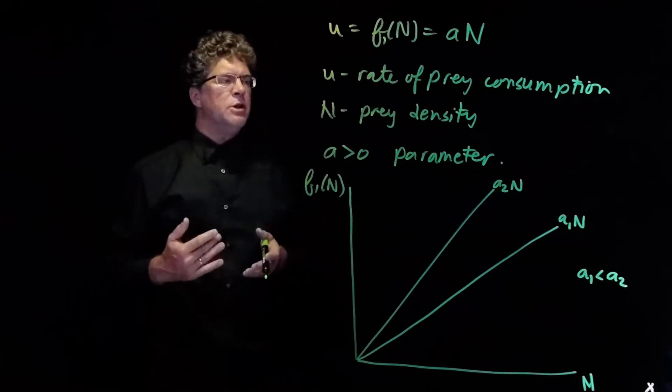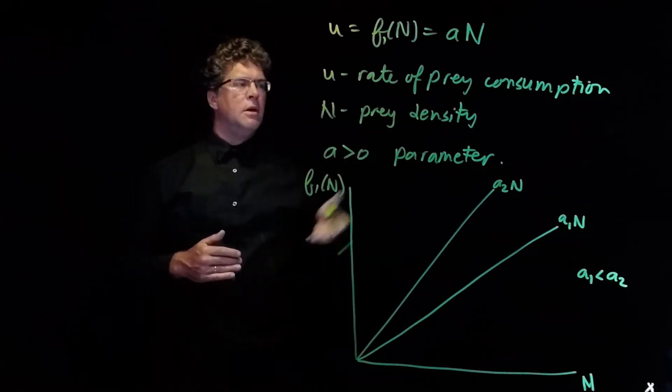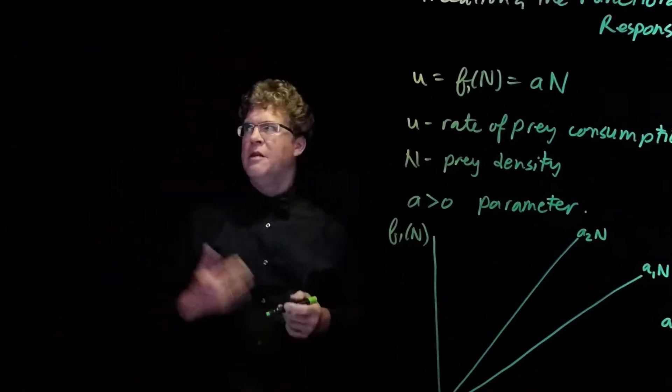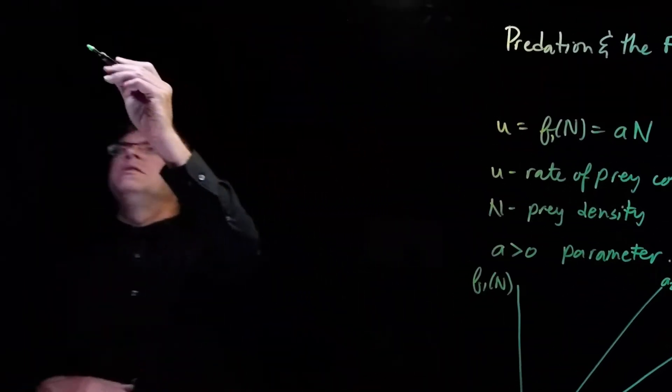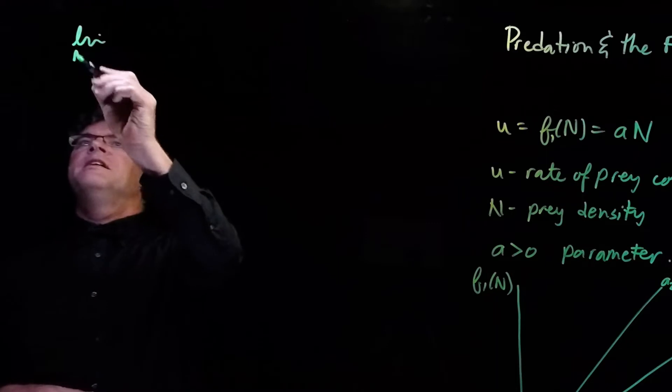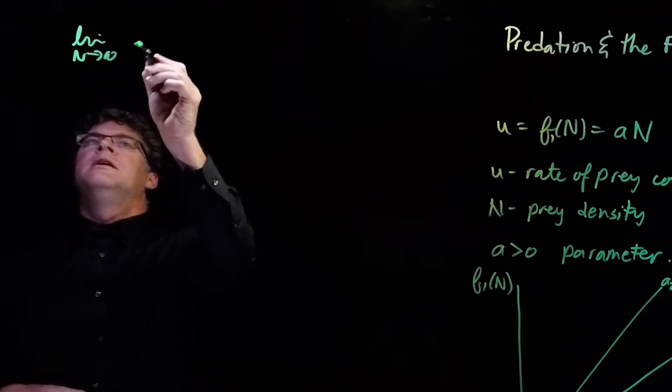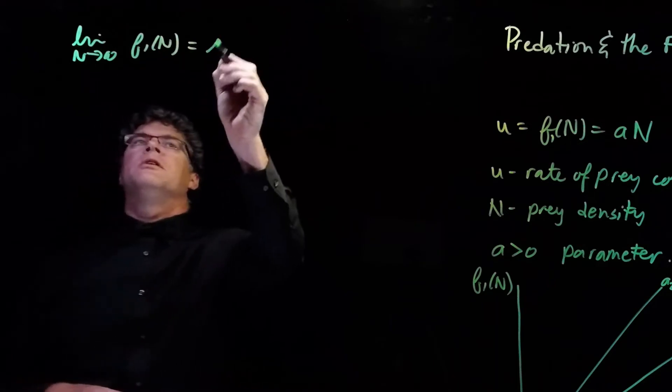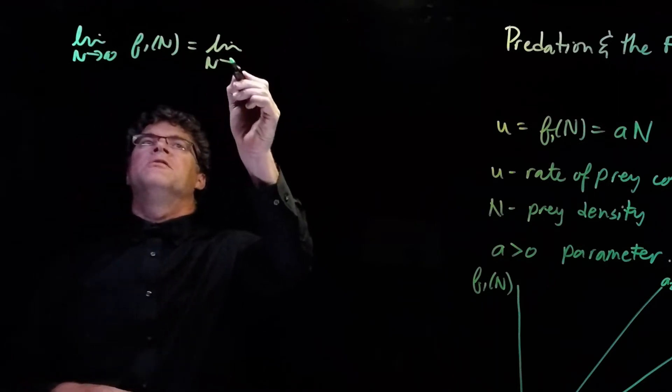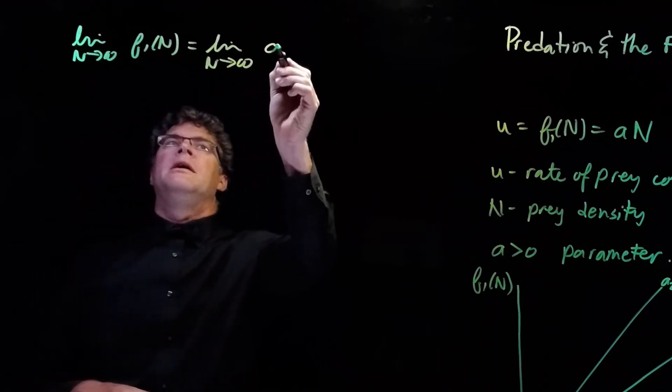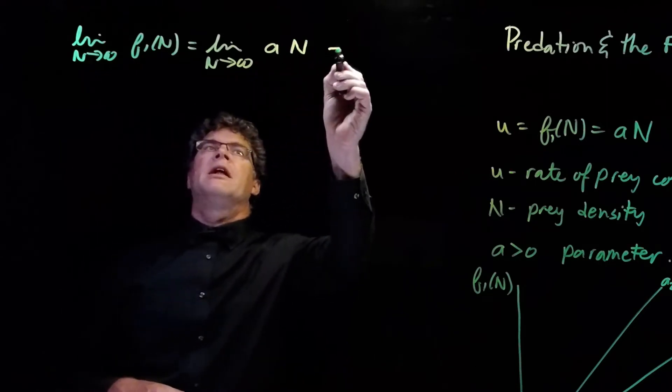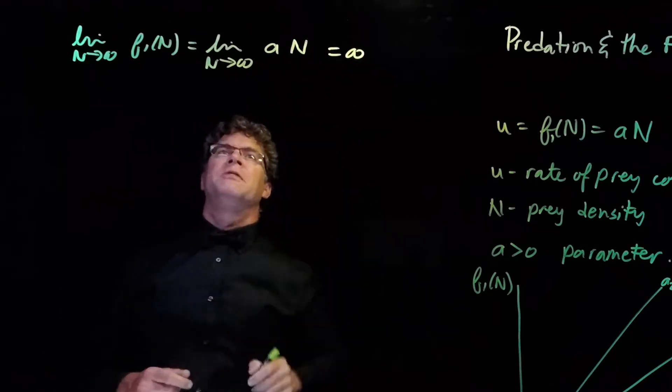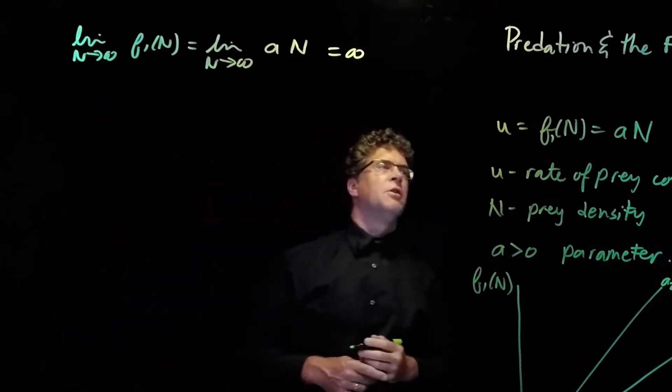the function f1 continues to grow until it becomes infinite. And so we could write the limit as n goes to infinity, f1 of n is equal to the limit as n goes to infinity, a times n. And that'll be infinity, because n is going to infinity, and a is a positive constant.